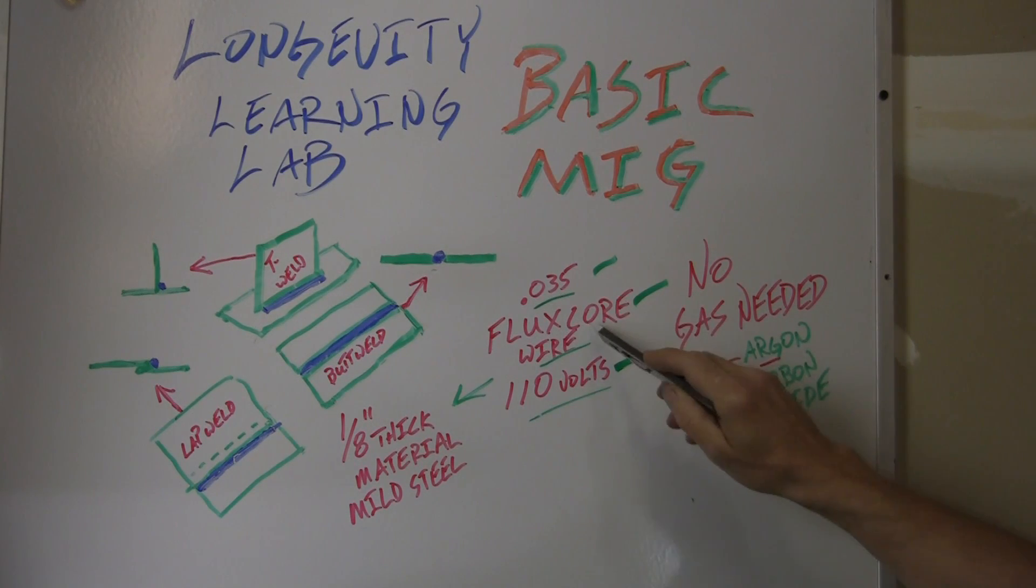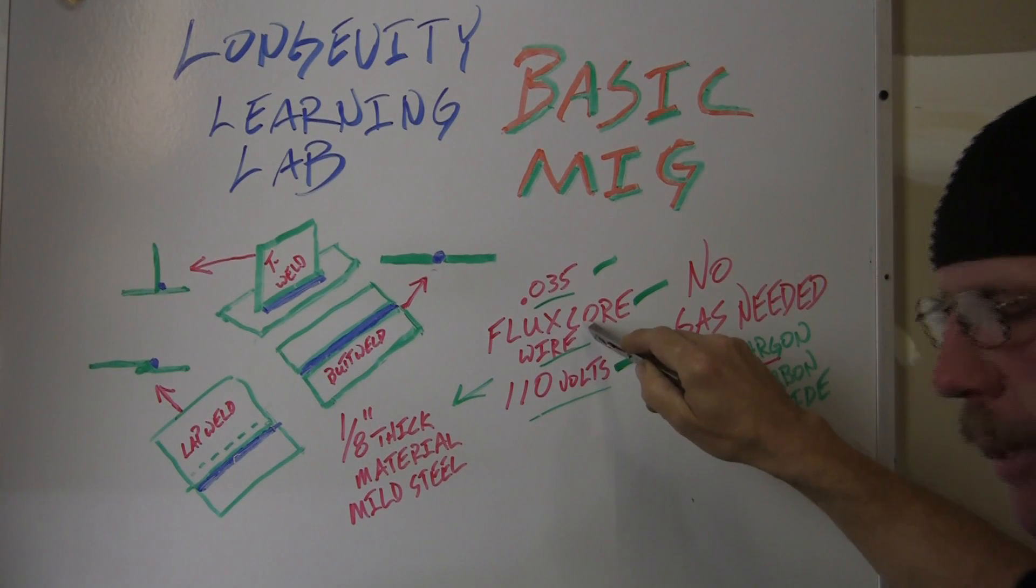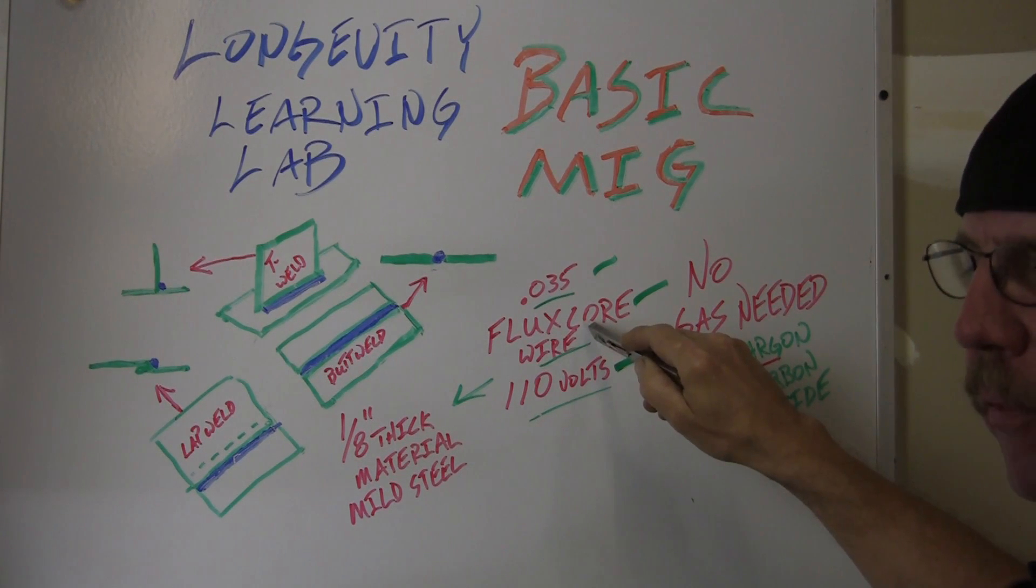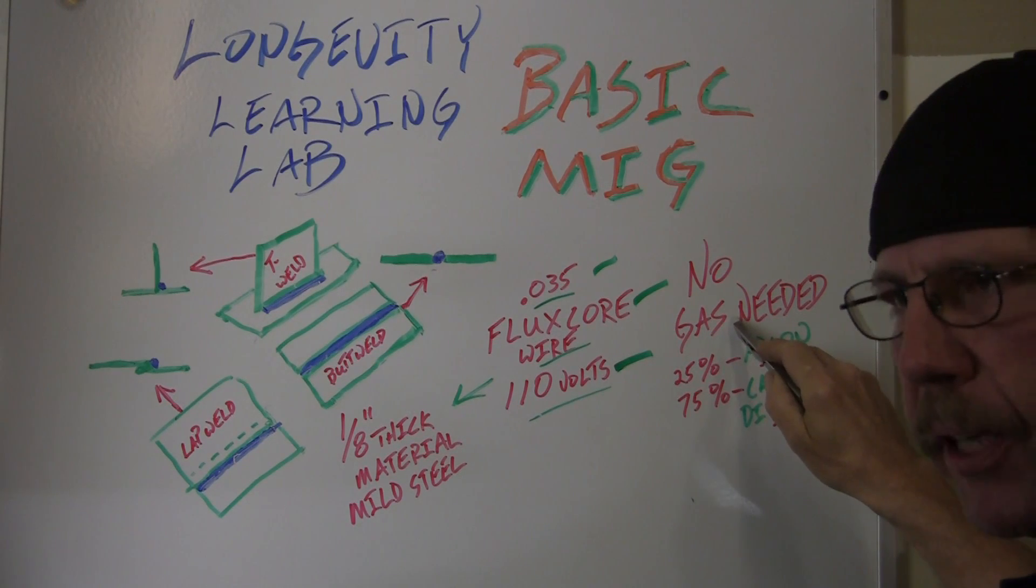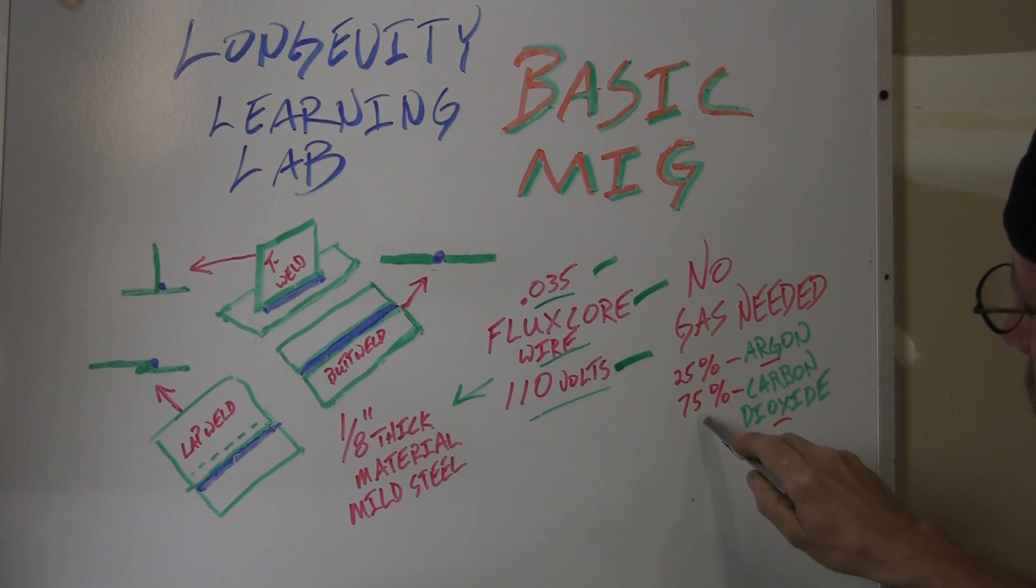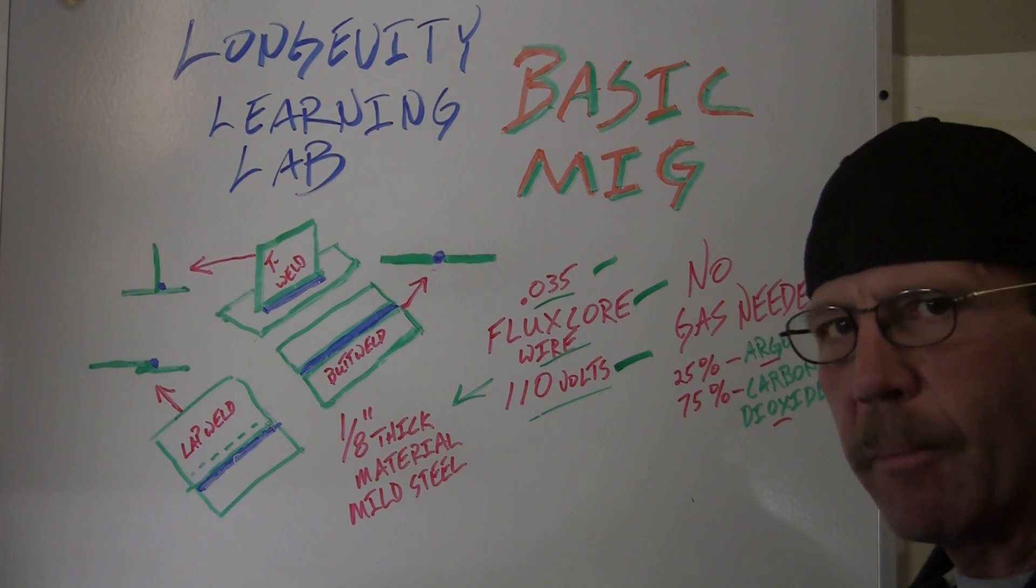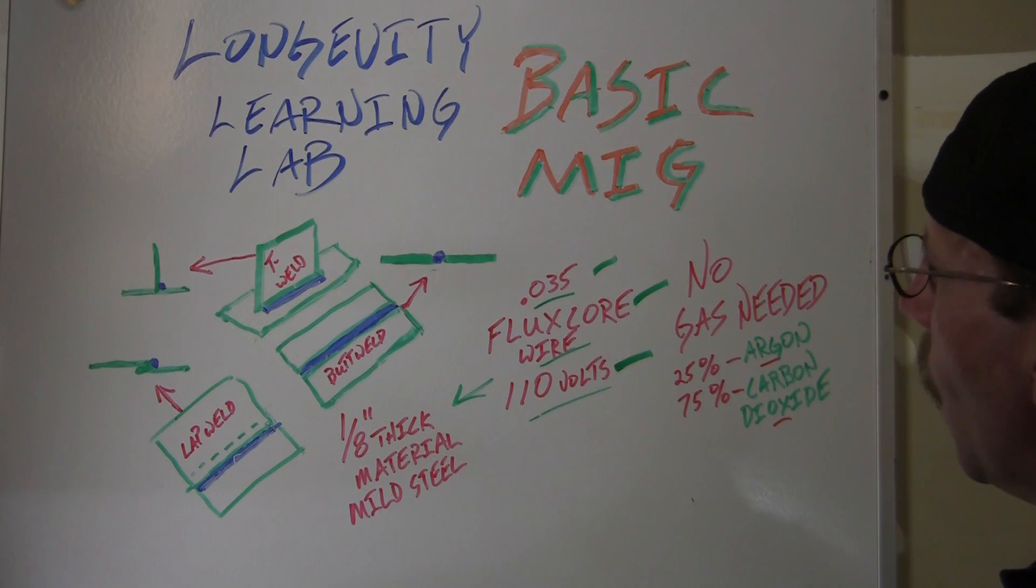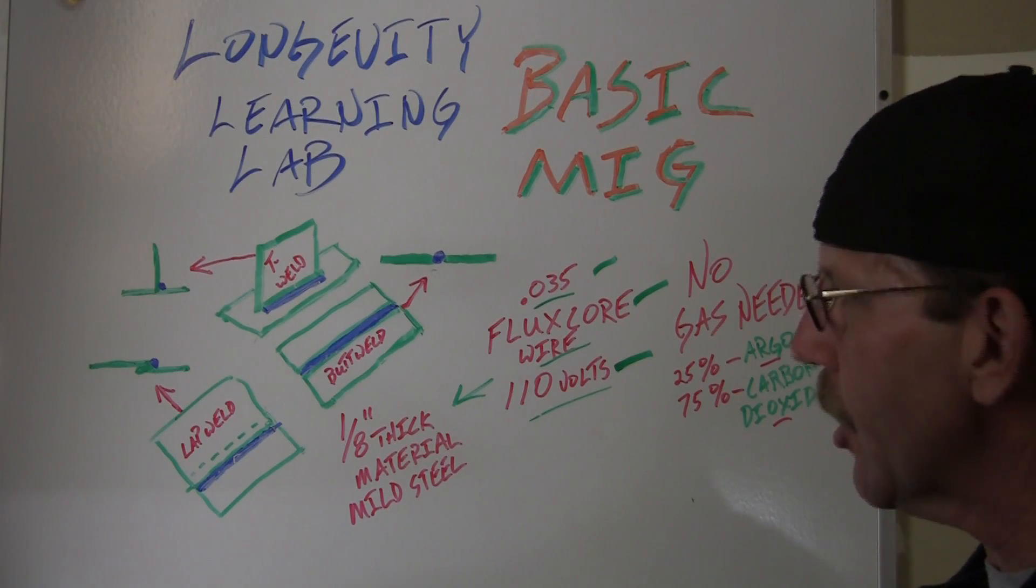Now, what's good about the flux core is if you're at home, you don't have to get the gas. You can work on your car, hobbies, or whatever - there's no gas needed. But if you do want to go for the gas, you want 25% argon and 75% carbon dioxide. I've got the material cut up and I'll get my hood. We'll weld up those joints, and after that I'll cut it up and drill holes.